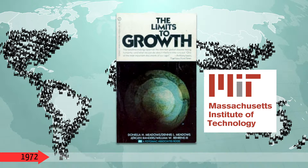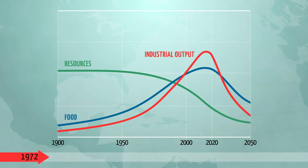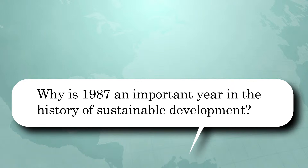Four years later, in 1972, the Massachusetts Institute of Technology published a scientifically groundbreaking report, The Limits to Growth. Using computer simulations, they forecast things such as industrial output, food production, and the availability of resources. More and more citizens and politicians came to realize that economic growth without sustainability was a dead-end street.